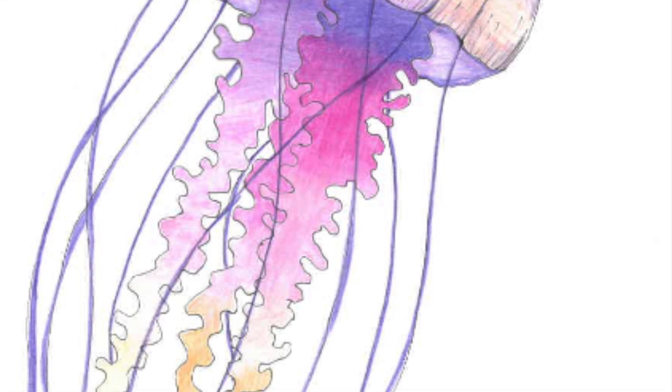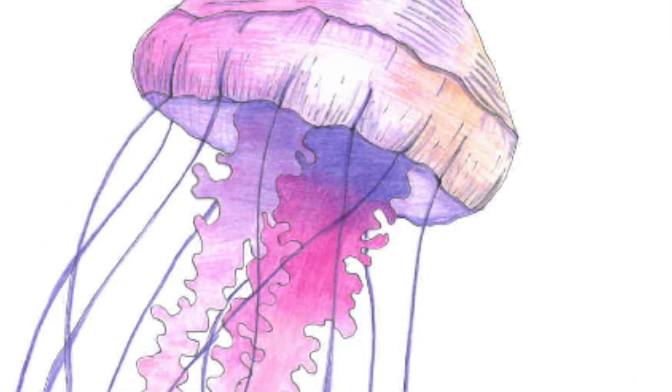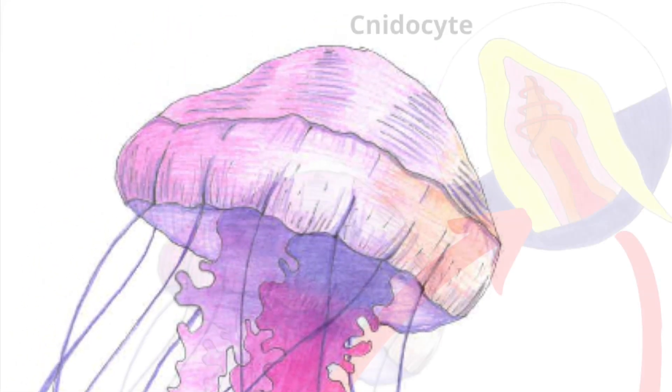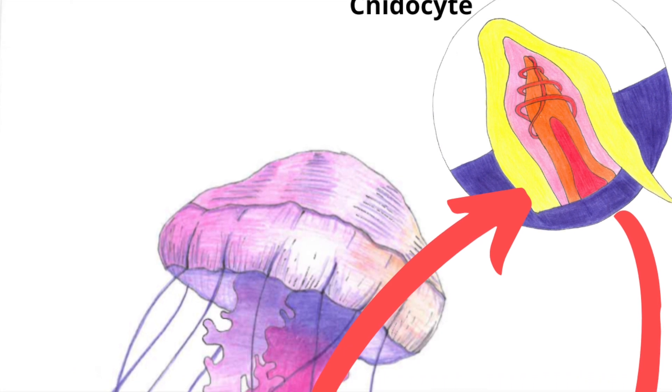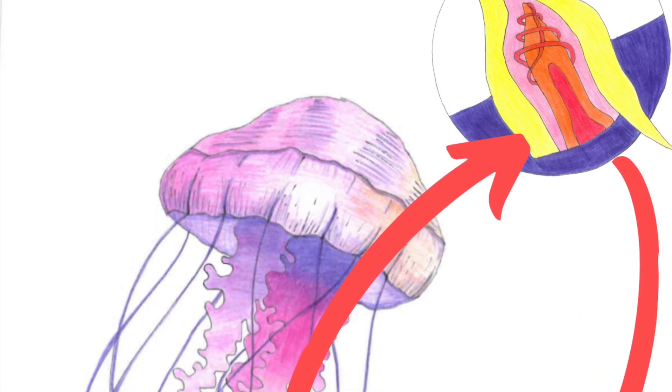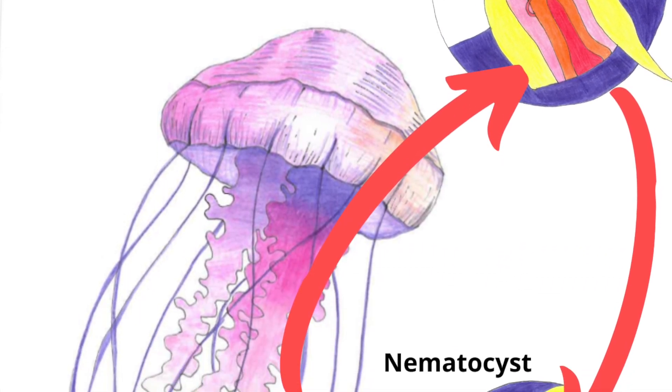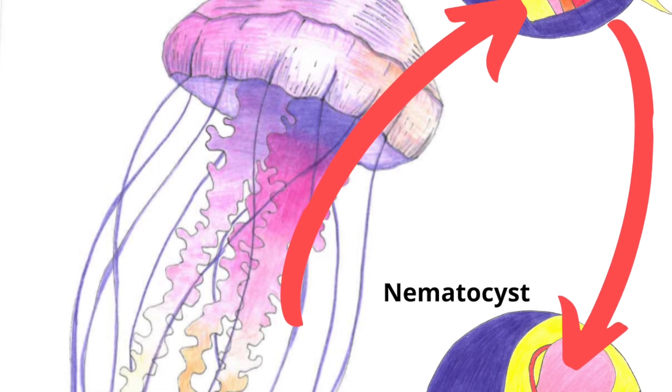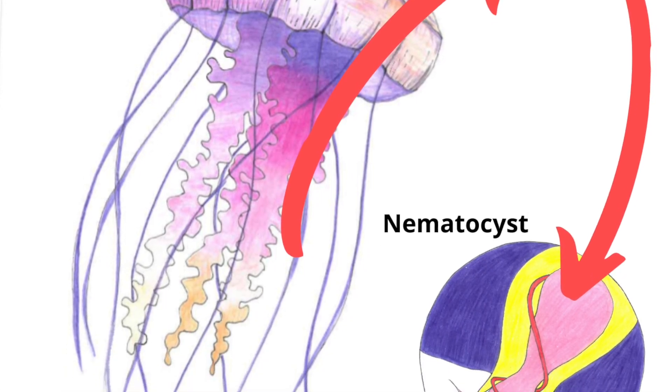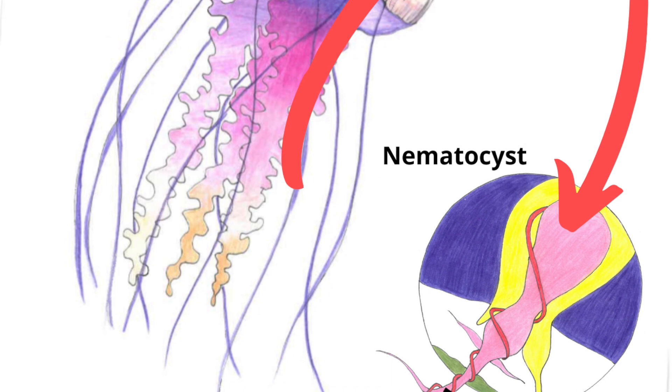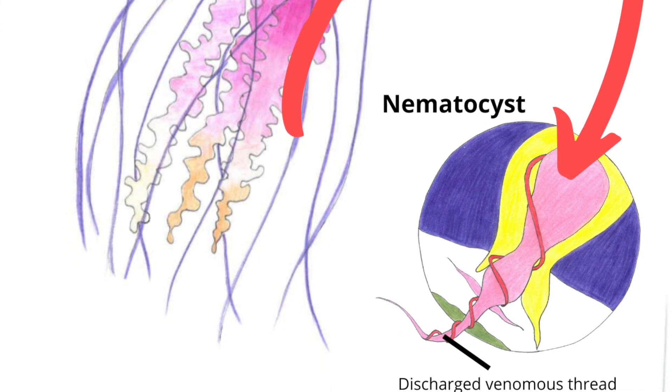From molecular clock data, we believe that cnidarians also evolved during this period. However, due to the soft-bodied nature of cnidaria, we have no physical fossil evidence of what ancient examples would have looked like or how they would have lived. Because of this poor preservation, we cannot say for sure that ancient cnidaria actually used venom. However, based on what we know of modern cnidaria, it is a fair assumption to say they did.